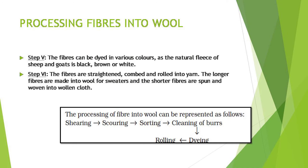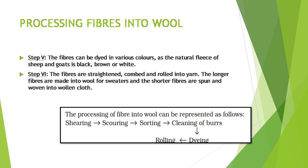The fibers are straightened, combed, and rolled into yarn. The longer fibers are made into wool for sweaters and the shorter fibers are spun and woven into woolen cloth. The whole process from fiber to wool can be summarized as: shearing → scouring → sorting → cleaning of burrs → dyeing → rolling into yarn.